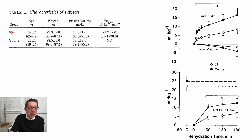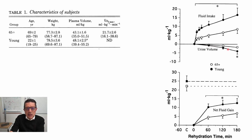The older adult group was 65 plus, with younger counterparts around 22 years old. They did dehydration and then looked at fluid intake ad libitum. Again, younger people drink much more water ad libitum versus older adults. Interestingly, even after taking into account urinary output, younger adults end up retaining much more water and returning to fluid balance much faster than the older adults.